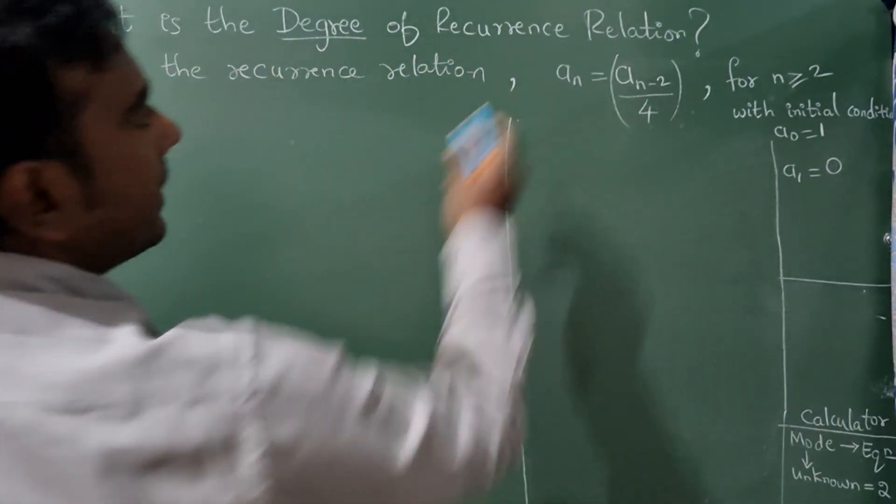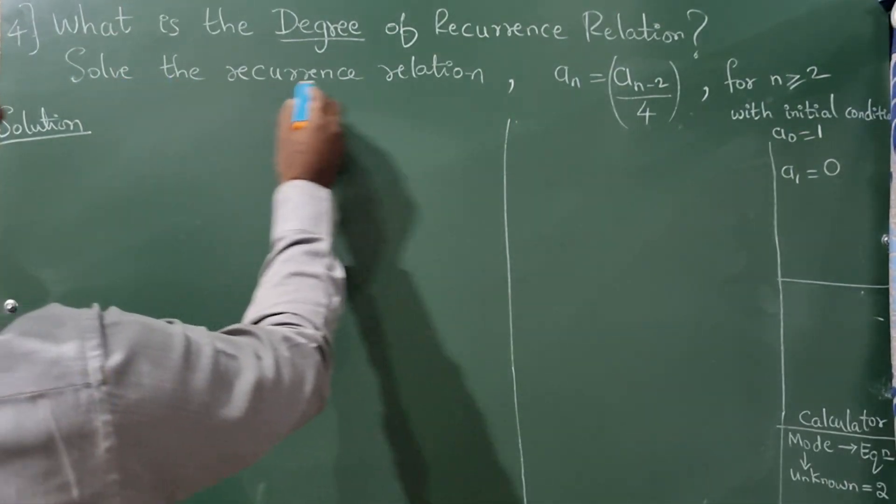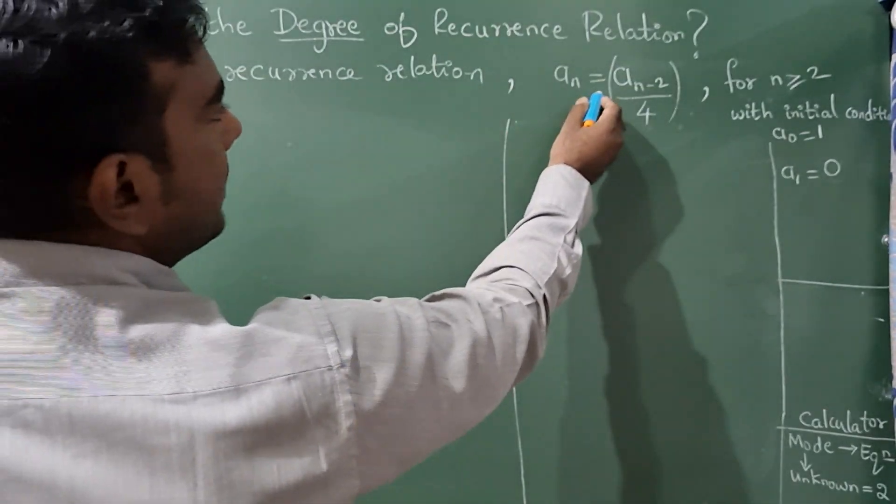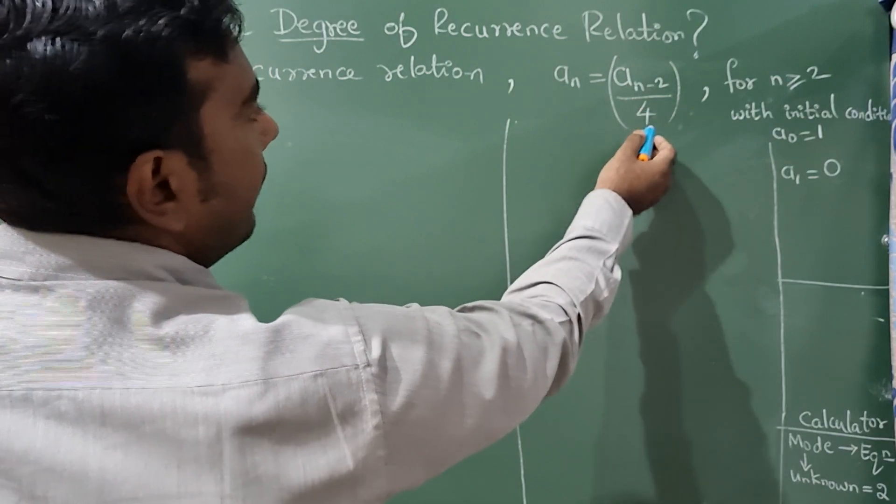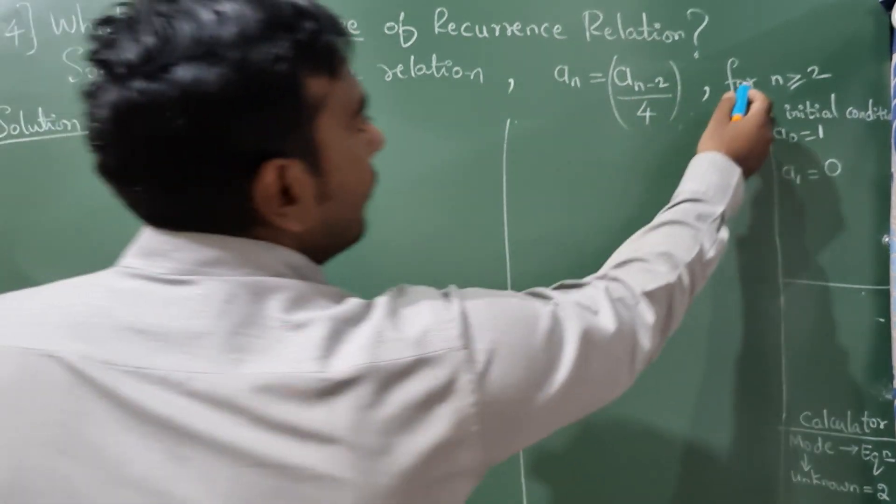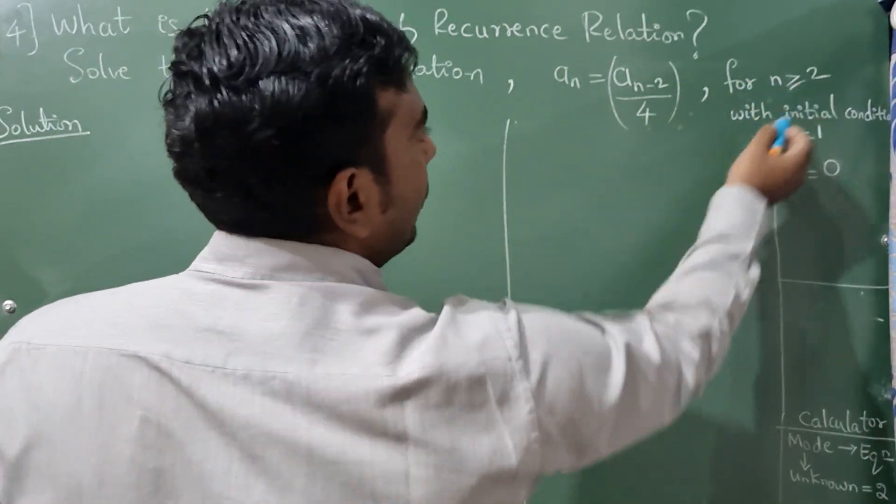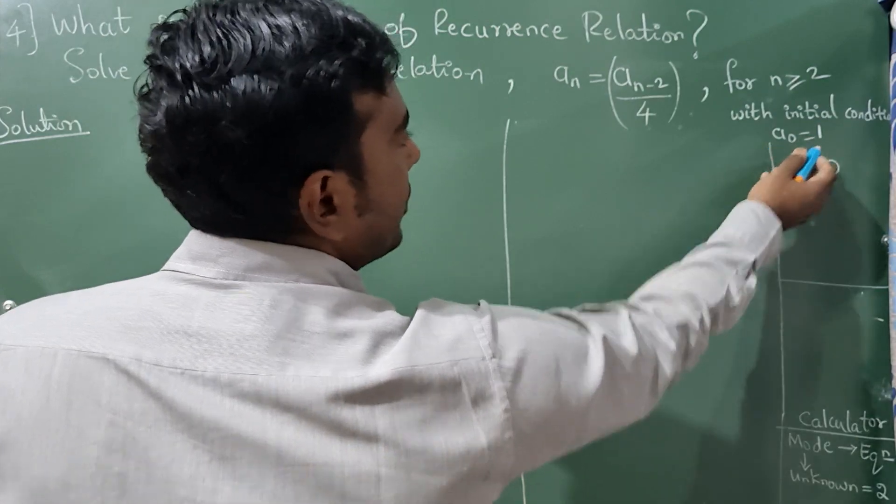What is the degree of recurrence relation? Solve the recurrence relation a_n = (a_(n-2))/4 for n ≥ 2 with initial condition a_0 = 1,